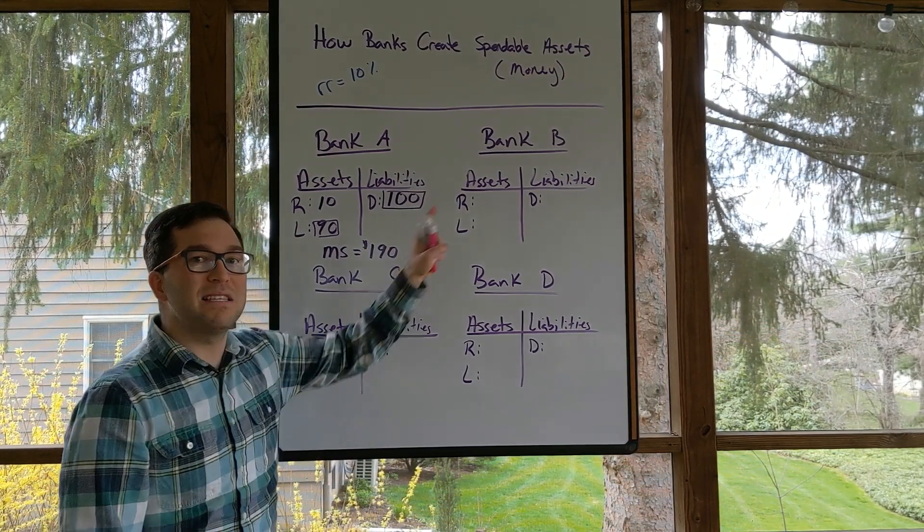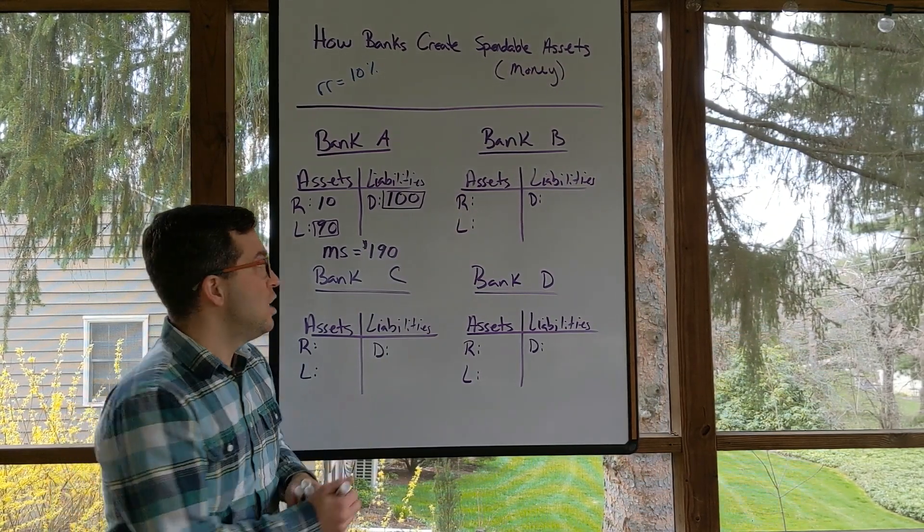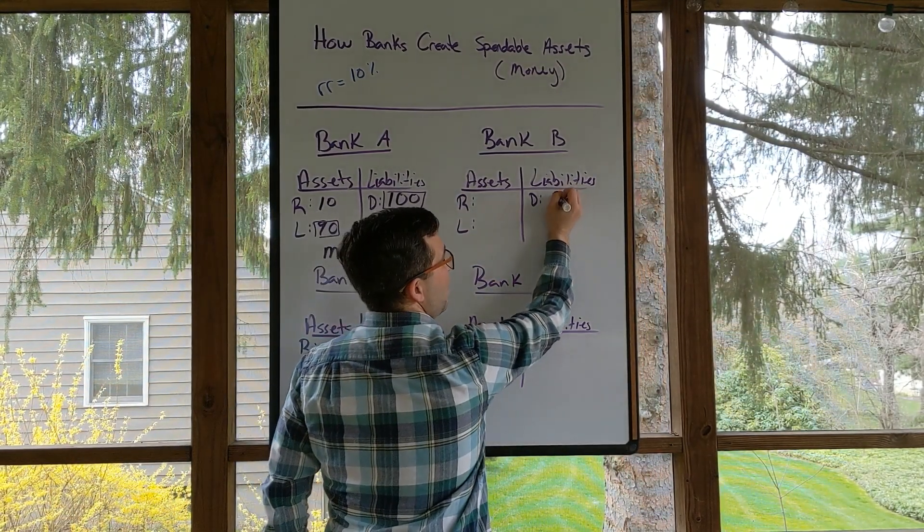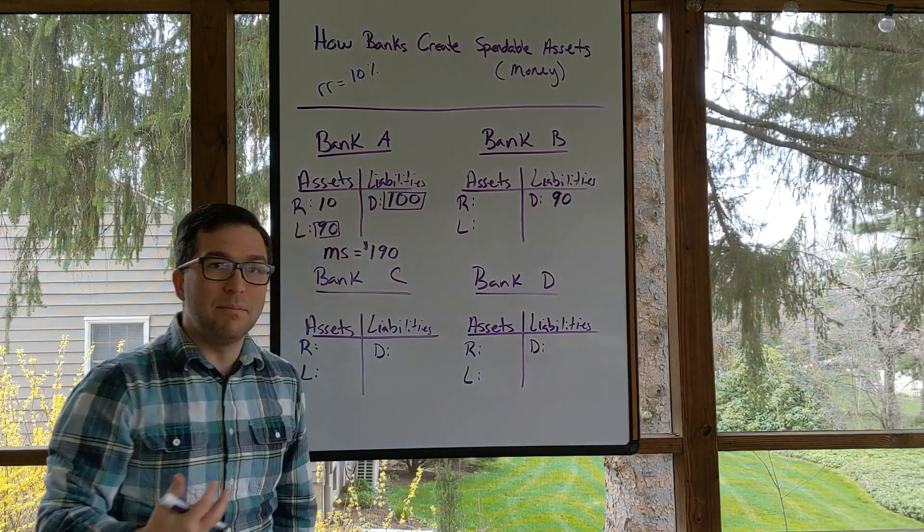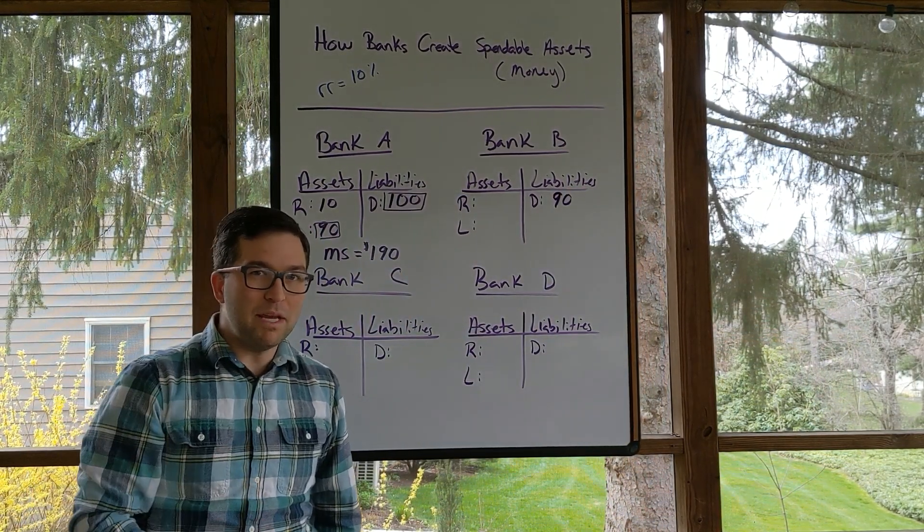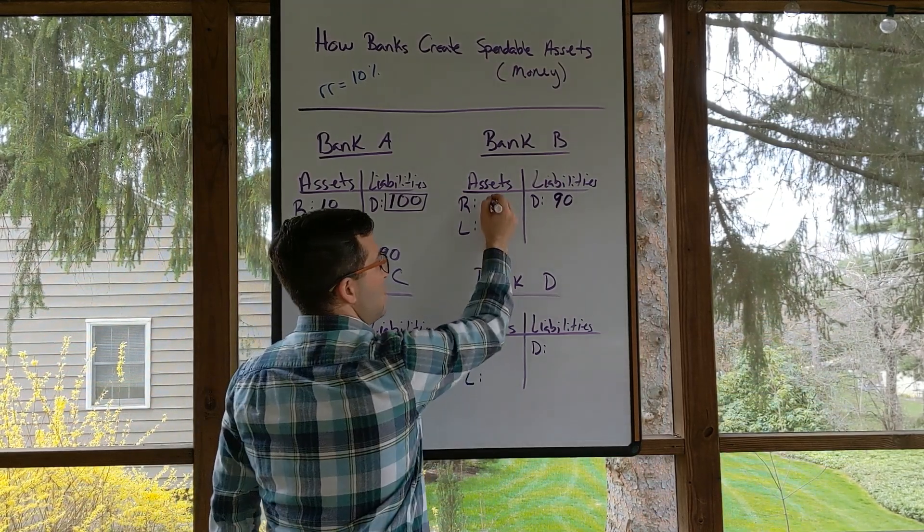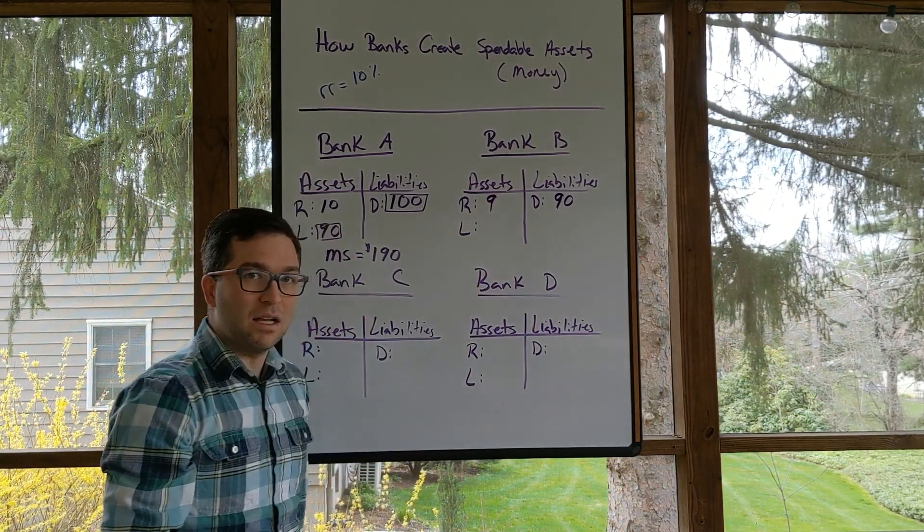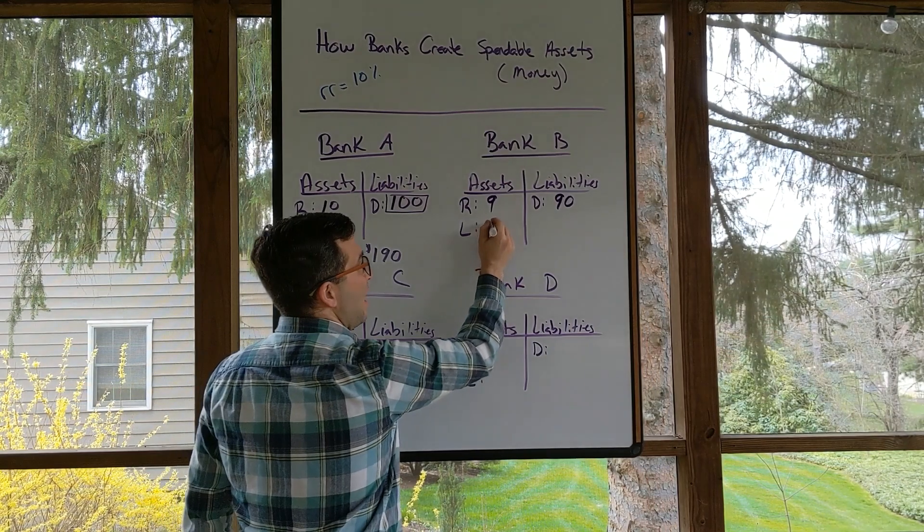For this example, let's say it gets deposited in a different bank, Bank B. So this goes over here. We have $90 deposited into Bank B. Well, what does Bank B do with that? They hold 10% reserves of $9 and they're able to lend out $81.